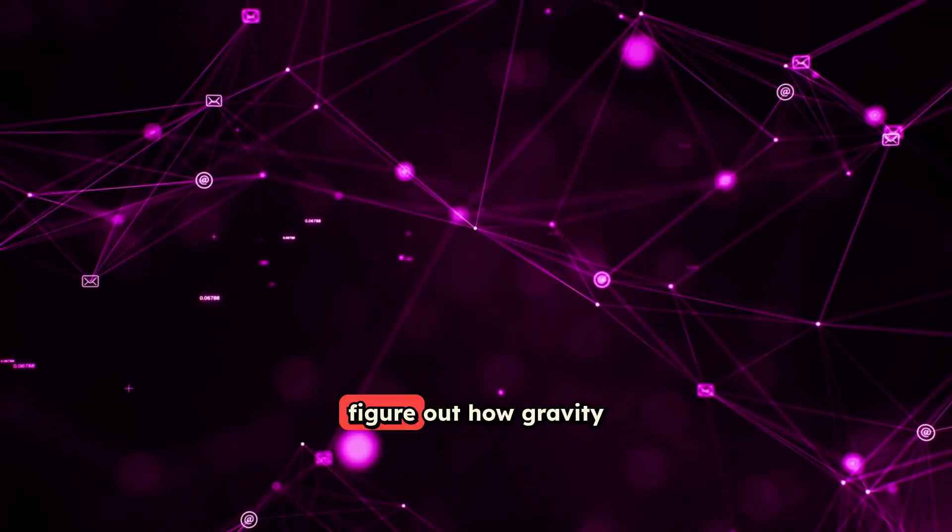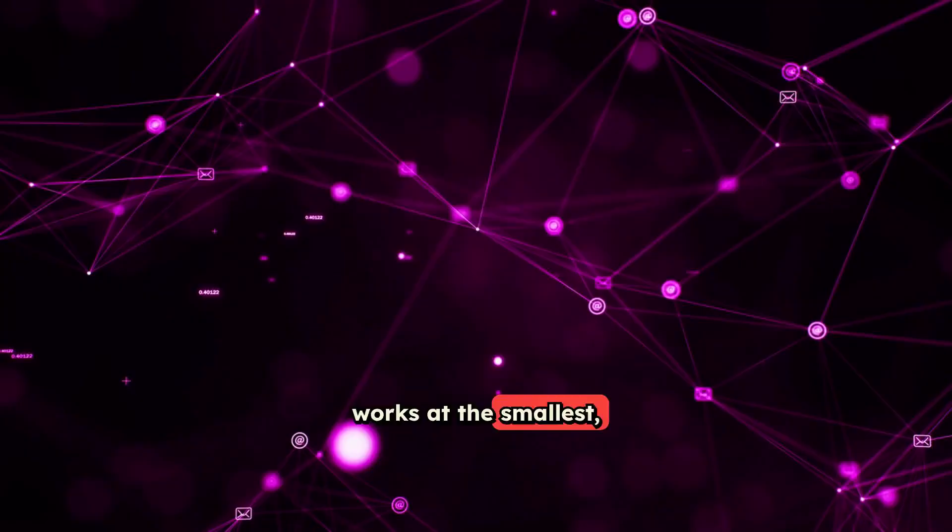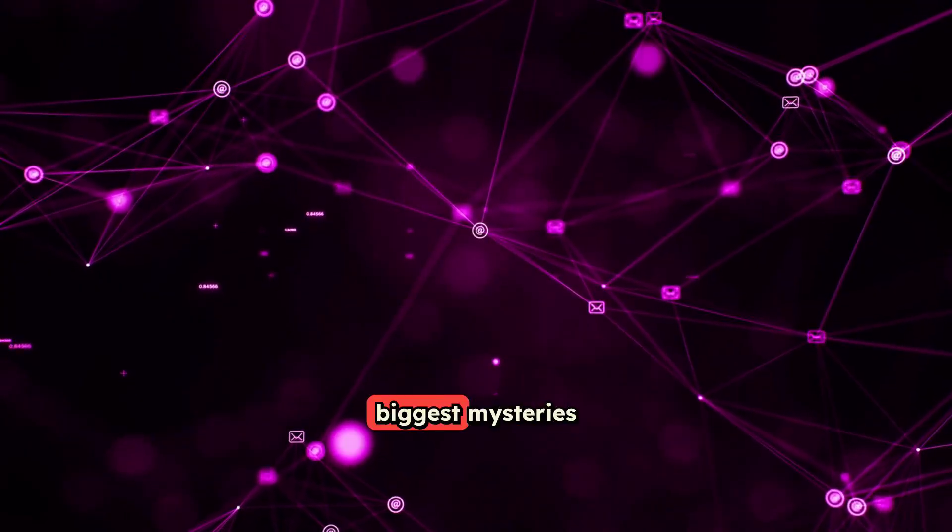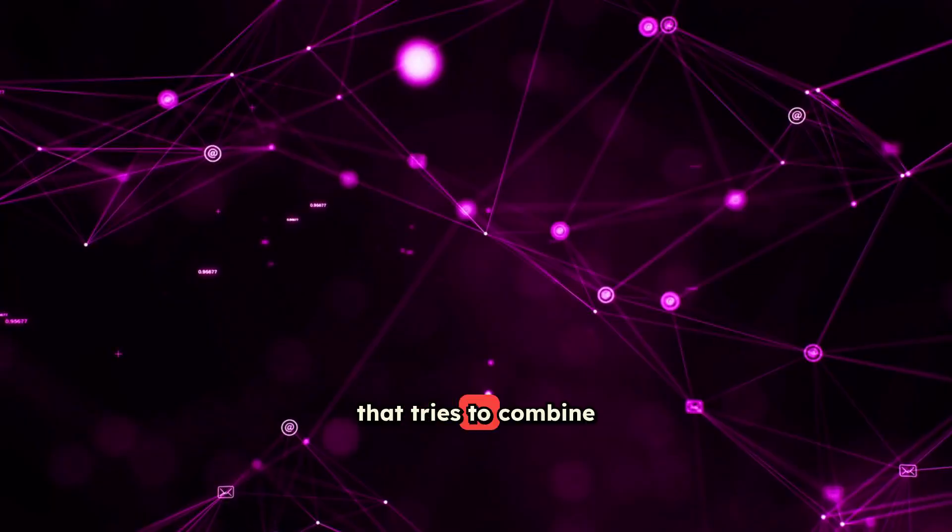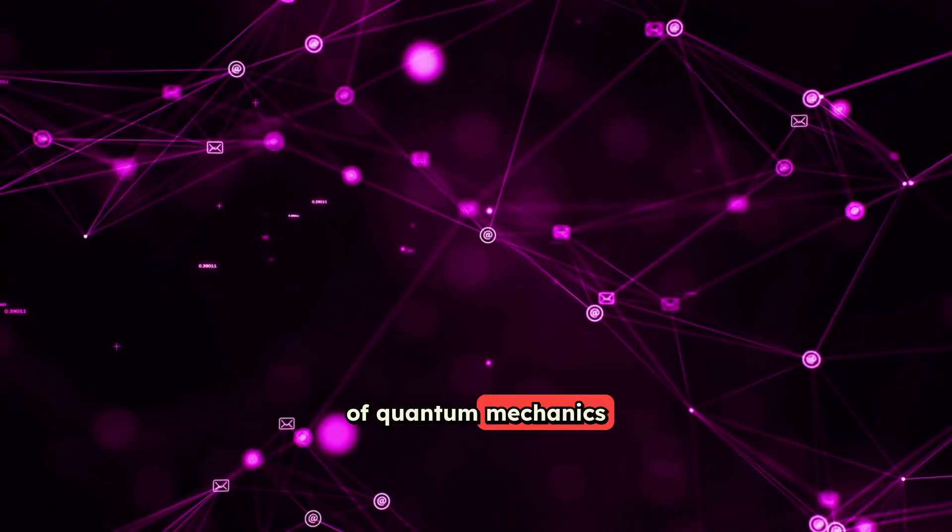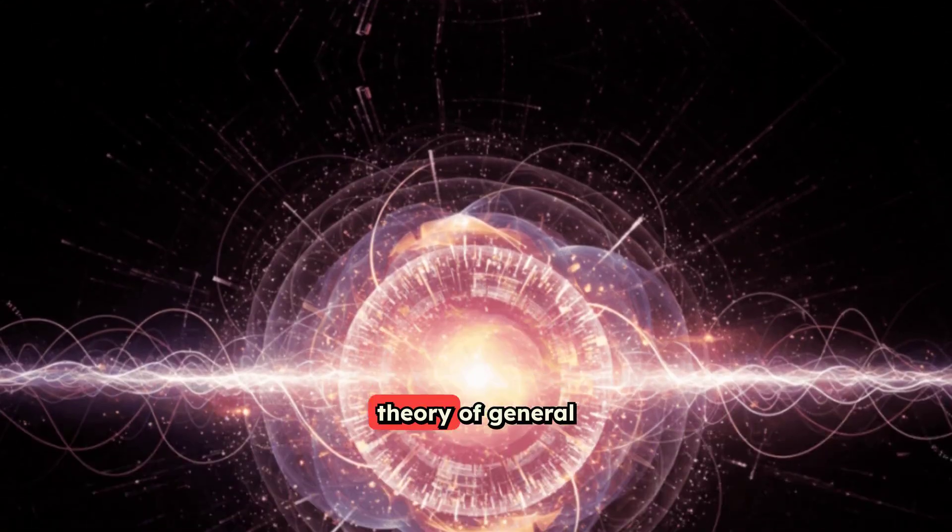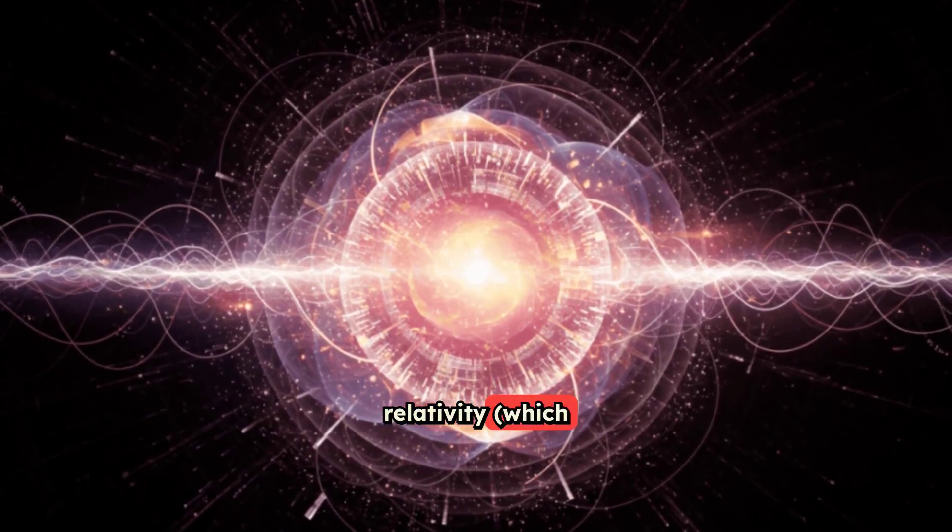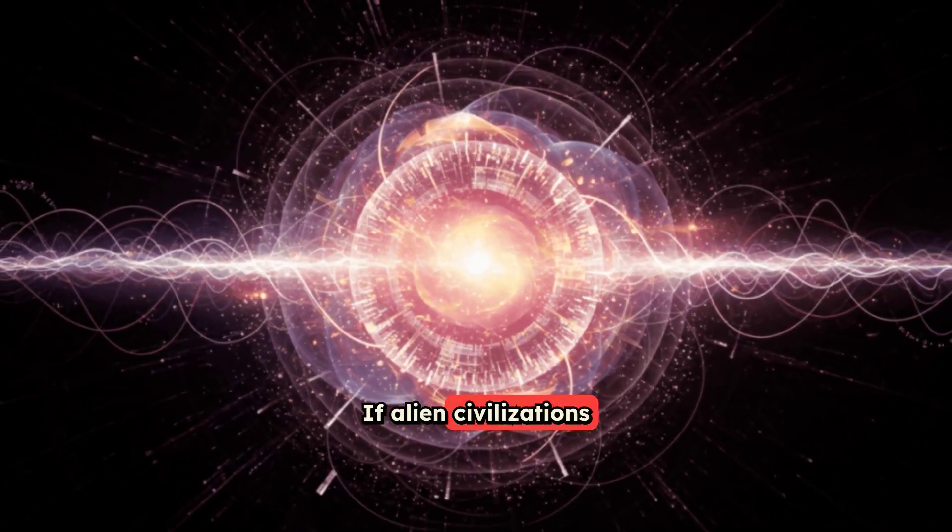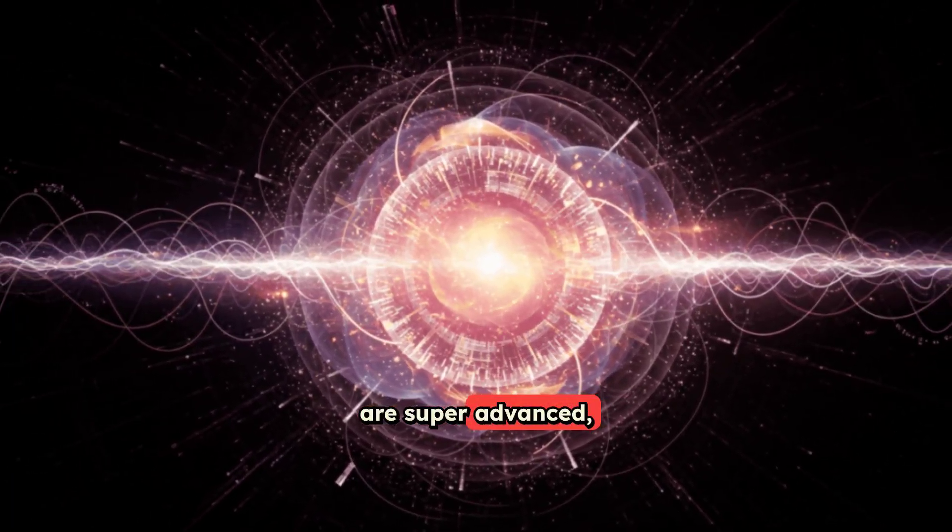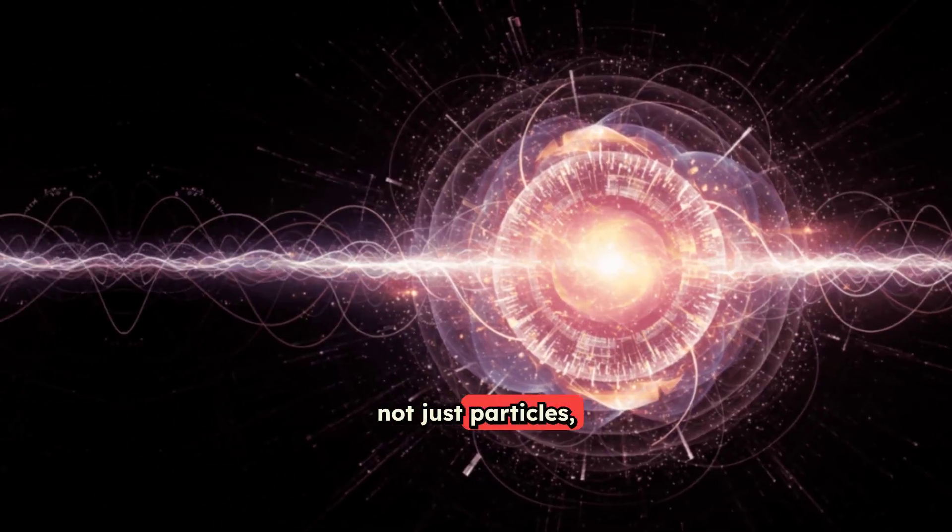Imagine trying to figure out how gravity works at the smallest quantum level. It's one of the biggest mysteries in science. Quantum gravity is the elusive theory that tries to combine the weird rules of quantum mechanics with Einstein's theory of general relativity, which describes how gravity works on big things like planets. If alien civilizations are super-advanced, they might know how to manipulate not just particles, but the very fabric of space-time itself.